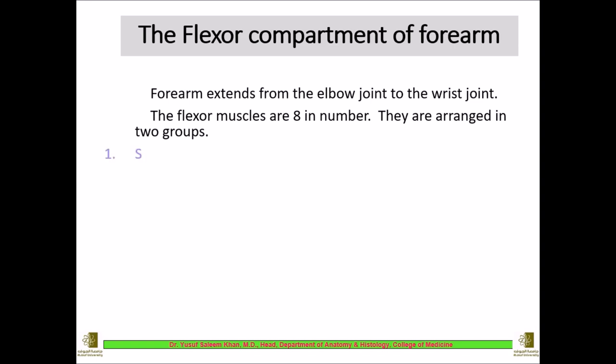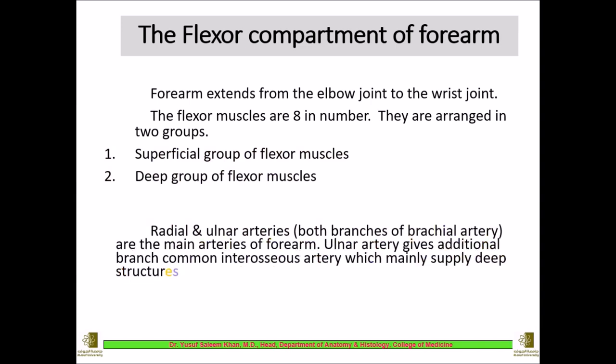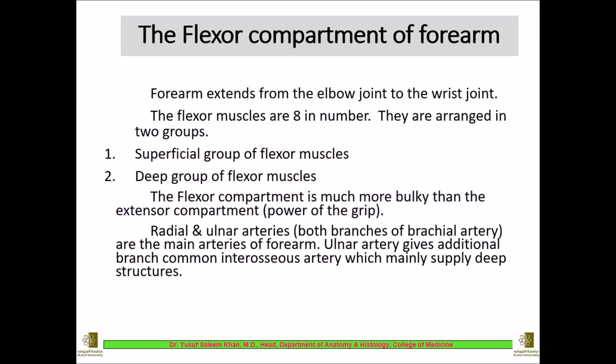The flexor compartment of the forearm is divided into a superficial group of 5 muscles and a deep group of 3 muscles. Although the extensor compartment has more muscles (12 compared to 8 in the flexor compartment), the bulk of muscle mass is greater in the flexor compartment, which is important for the power of grip.